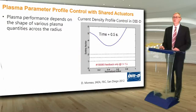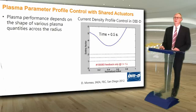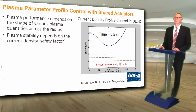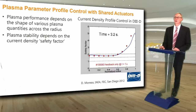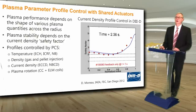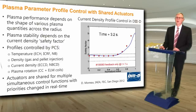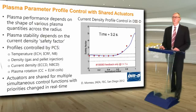The control of plasma parameter profiles across the radius must share the available actuators. Plasma performance depends on the shape of several plasma parameter profiles. Plasma stability depends on the current density profile safety factor, and a movie shows control of the safety factor profile in DIII-D with feedback on the driven current to keep the safety factor in the core within the region of 1.5 to 2 for improved stability. The PCS will control profiles of plasma temperature, density, current density, and rotation, with actuators shared for multiple simultaneous control functions with priorities changed in real time depending on plasma conditions.